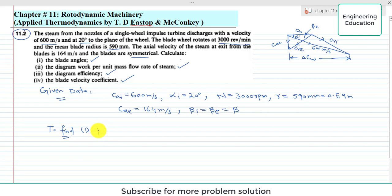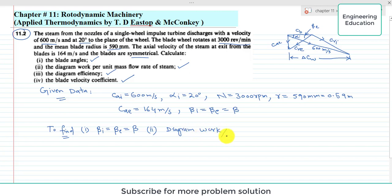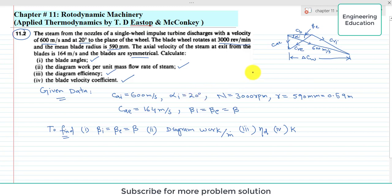We have to find four things: first, the blade angle at inlet and exit — since the blades are symmetrical we only find the value of beta; second, the diagram work per unit mass flow rate; third, the diagram efficiency; and fourth, the blade velocity coefficient K.